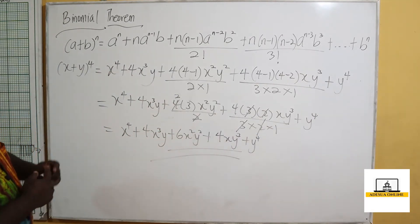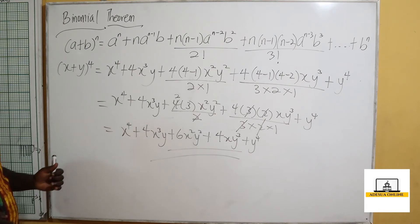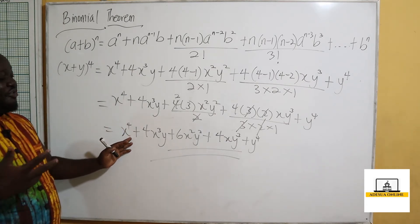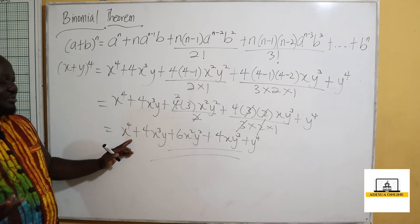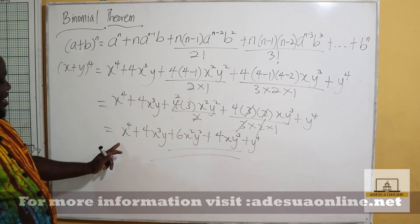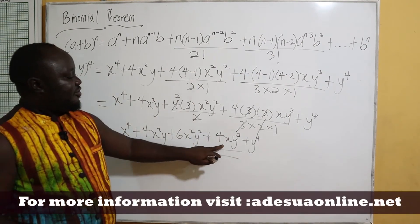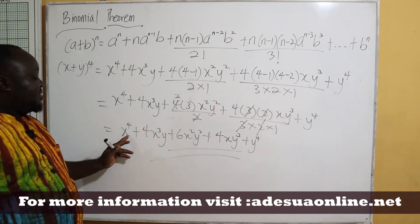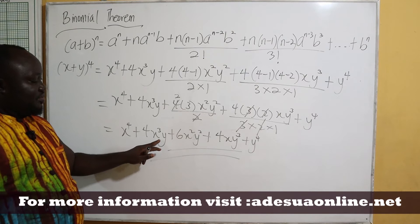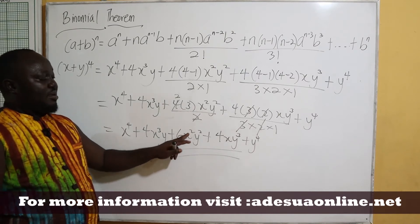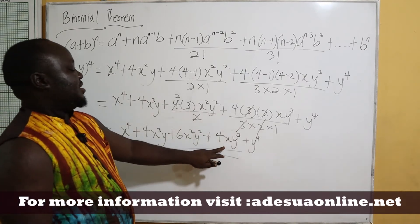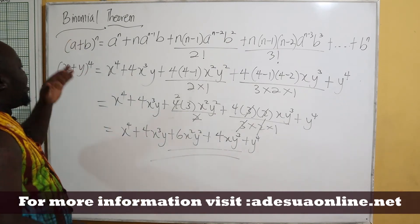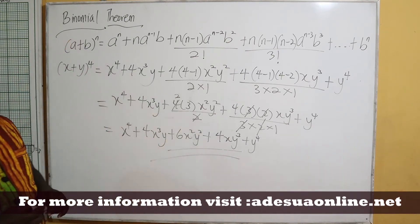Indeed, if we want x plus y raised to the power 4, using Pascal's triangle the coefficients are 1, 4, 6, 4, 1. So we can see that we have x raised to the power 4, reduce by 1 and introduce y each time: 4x³y, plus 6x²y², plus 4xy³, plus y raised to the power 4. So we call this the binomial theorem.